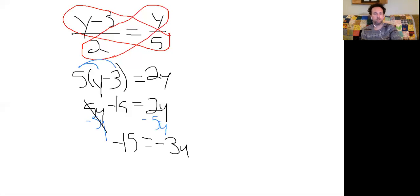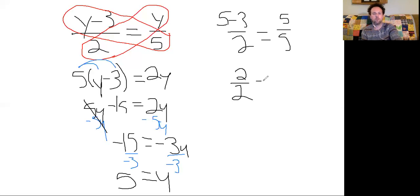So I added and subtracted. Now in order to get this y by itself, I have to divide by negative 3. Leaving me with y is left by itself on one side. Negative 15 over negative 3. Negative divided by a negative. My answer is positive. 15 divided by 3 is 5. And if I put that back in there, 5 minus 3 over 2 equals 5 over 5. Well, what's 5 minus 3? 2 over 2 equals 5 over 5. And then both of these fractions reduce to 1. 1 is equal to 1. So that works.